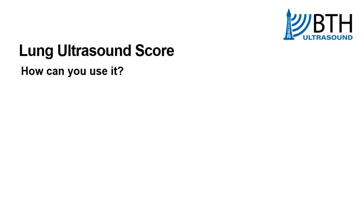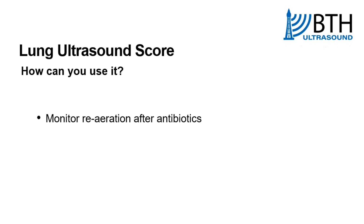So how can the lung ultrasound score be used? You can use it to monitor re-aeration after antibiotics. So antibiotics are initiated for chest infection, and then the effects of those antibiotics as they begin to work can be used to monitor a consolidation across the 12 zones. As it starts to improve and resolve, it hopefully begins to become normal aerated lung tissue again.